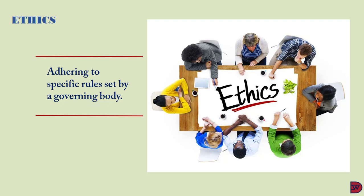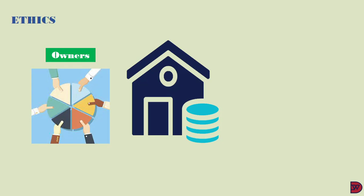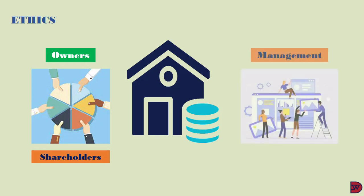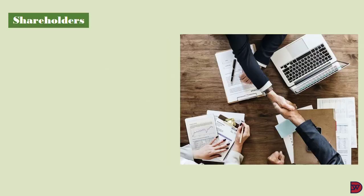These bodies also set and mete out punitive measures to those who flout the rules. Every business has a separation of powers: there are the owners, termed shareholders or members, and there is also the management, called the directors. Every business, especially a limited liability one, must have at least one shareholder and two directors. Members or shareholders can serve as directors; nevertheless, that separation must be recognized.